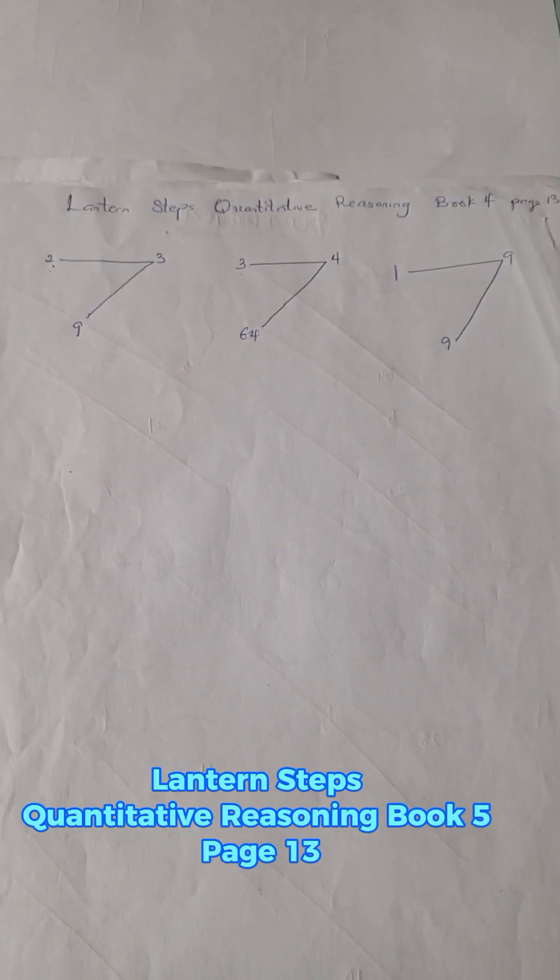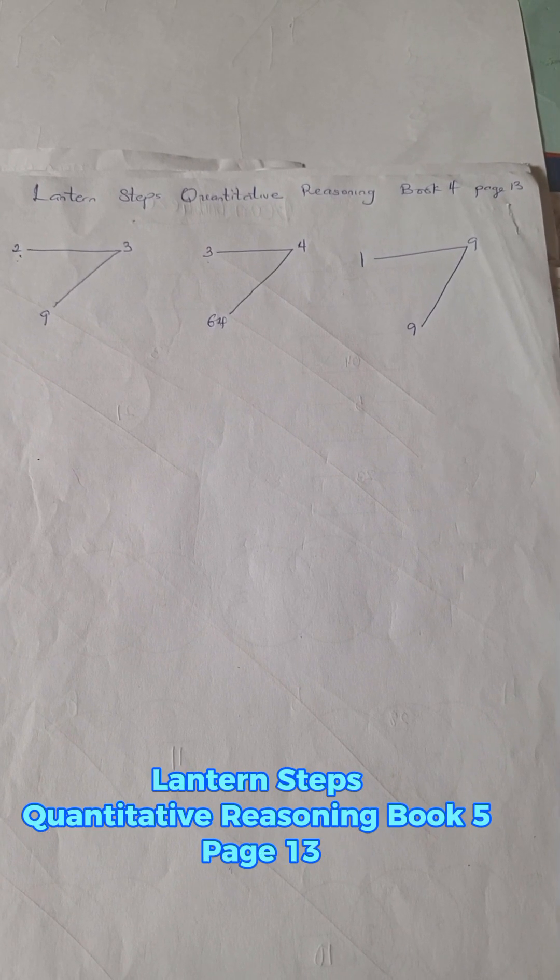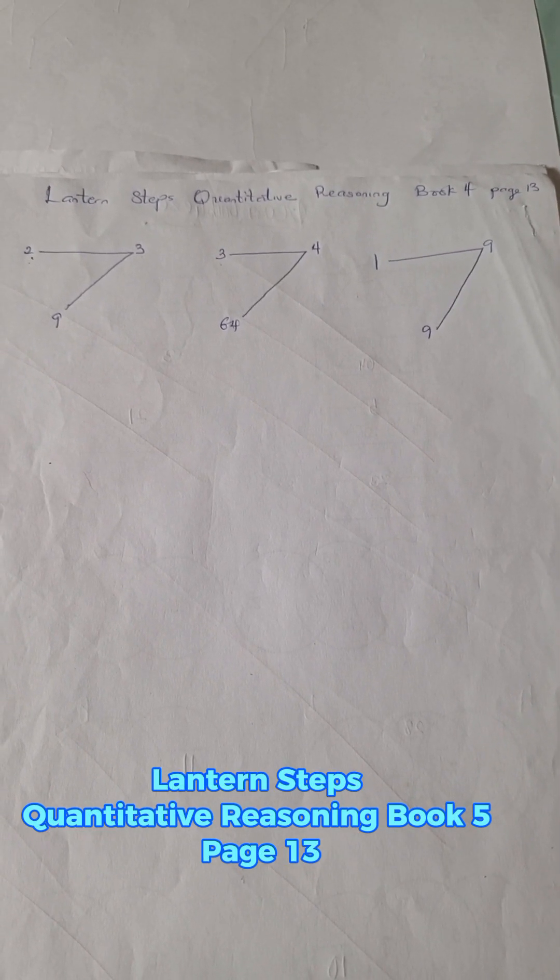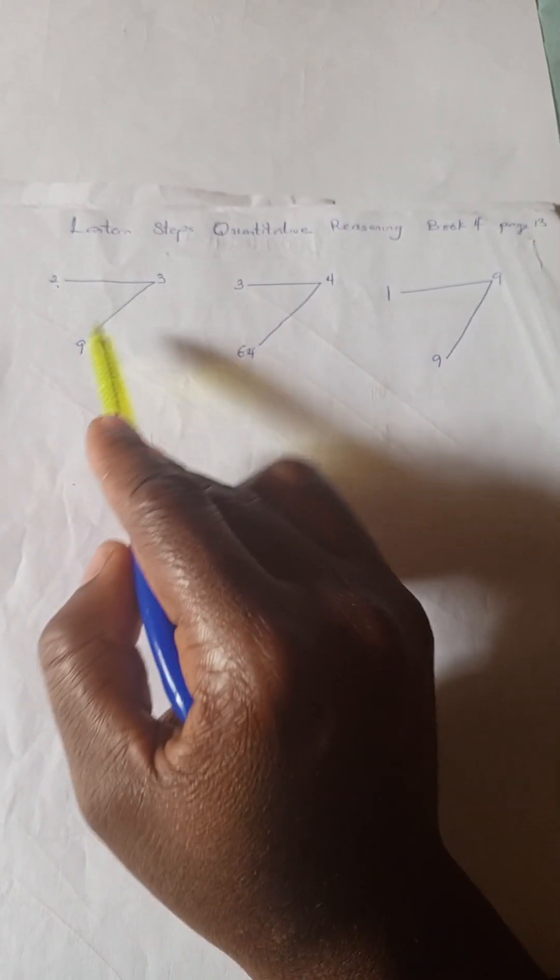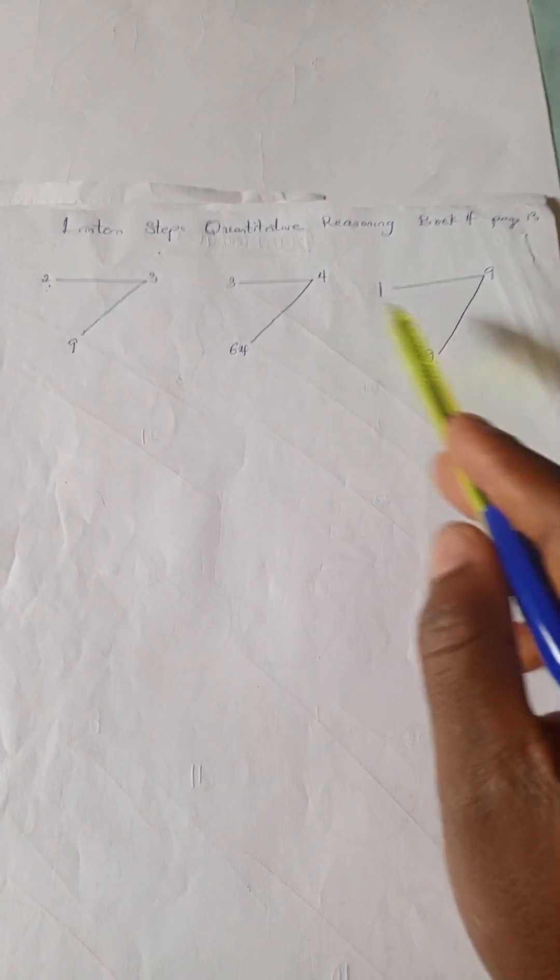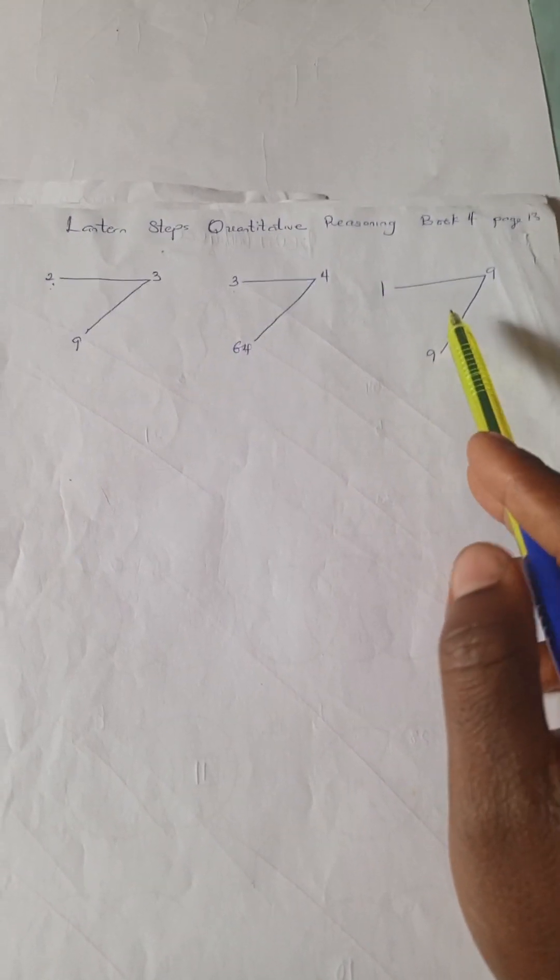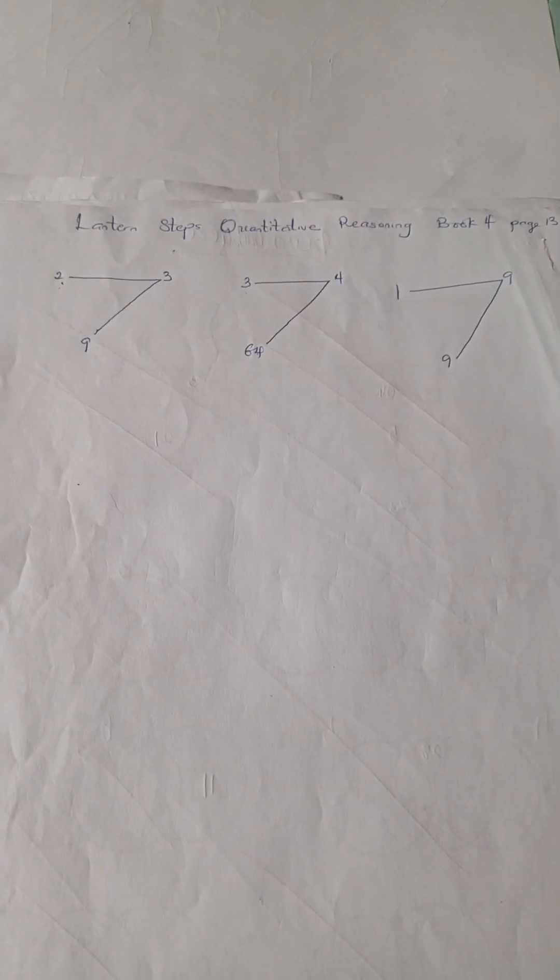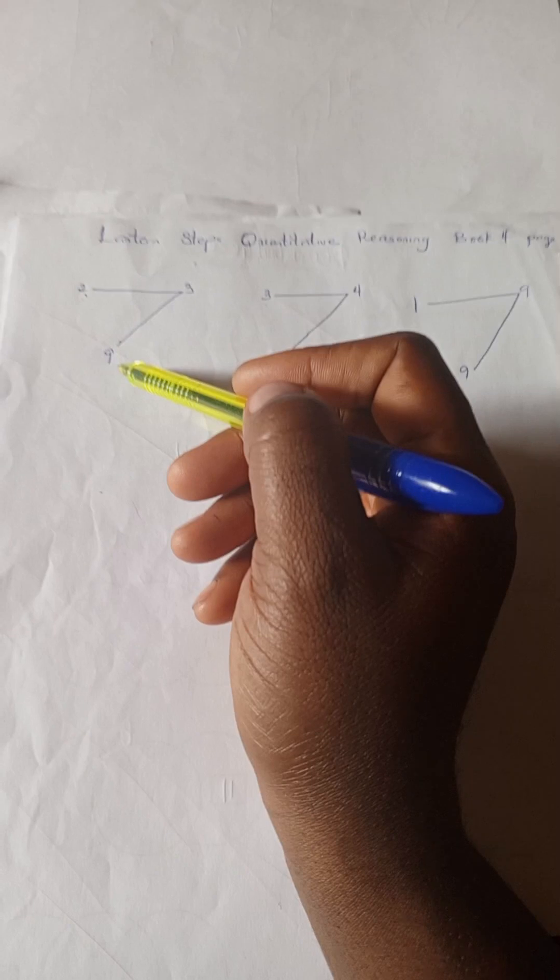Welcome to quantitative solution and this is Lantern Quantitative Book 5 and we're going to be solving this. Looking at this problem we have 2, 3, 9 and here we have 3, 4, 64 and here we have 1, 9, 9.